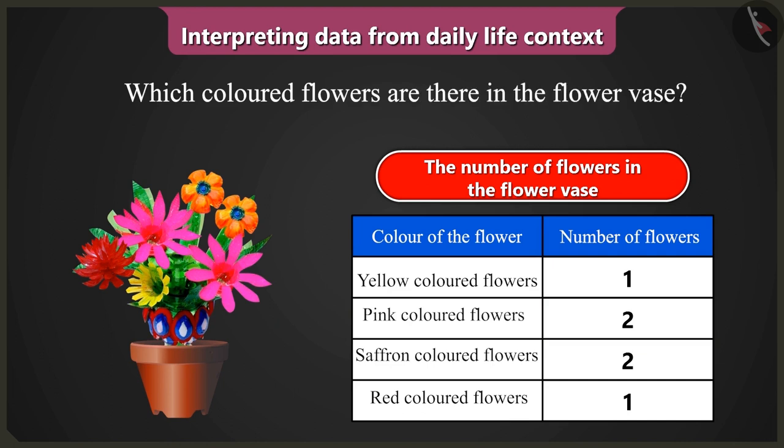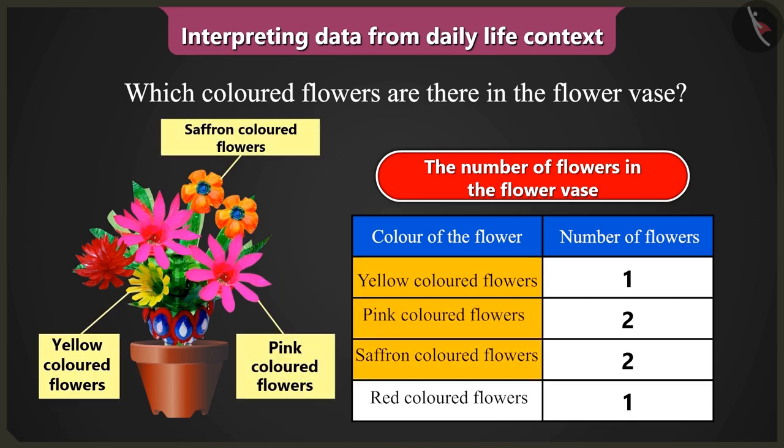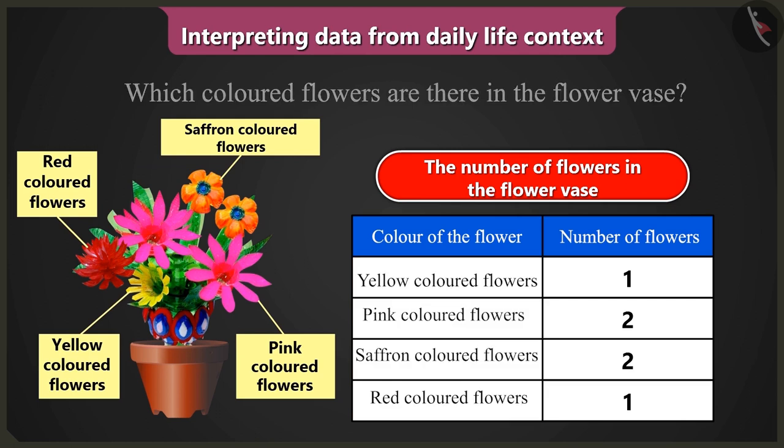Which colored flowers are there in the flowers? There are yellow, pink, saffron and red colored flowers in the flowers.